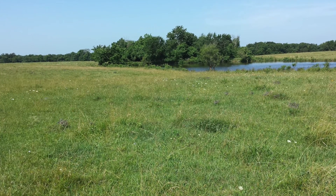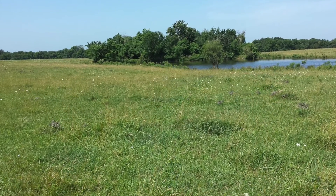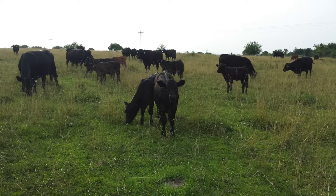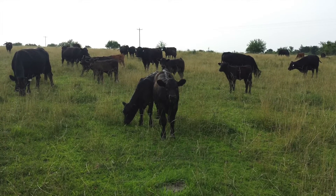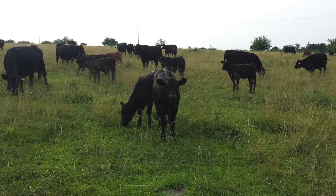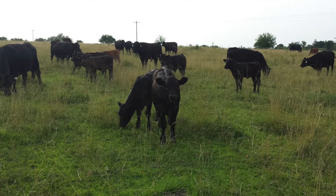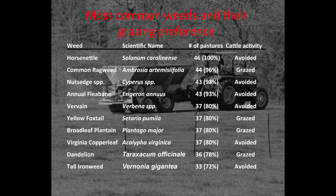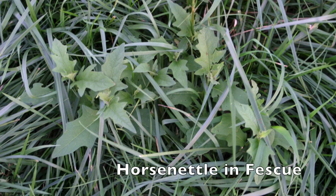A big portion of my study was to show what weeds were most common and if they were grazed by cattle. This data will allow farmers and producers to make better decisions when deciding to manage their weeds. The table shows what the top 10 surveyed weeds were, the percentage of pastures they showed up in, and the grazing preference by the cattle. Horse nettle and common ragweed were the two most common species, with horse nettle showing up in all pastures and common ragweed showing up in almost all pastures.